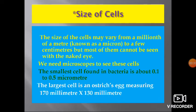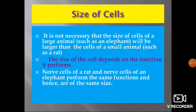The size of cells may vary from a millionth of a meter, known as a micron, to a few centimeters. Most of them cannot be seen with the naked eye and we need microscopes to see these cells. The smallest cell found in bacteria is about 0.1 to 0.5 micrometers. The largest cell is an ostrich egg measuring 170 mm by 130 mm.